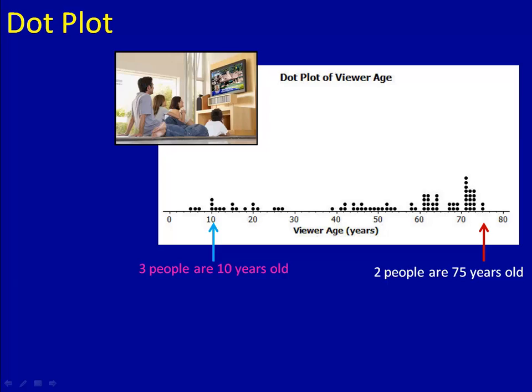We can tell by looking at this dot plot that there are viewers of all ages, people from three years old on up to 75. There's lots of good information that we can tell from this. So first, let's begin by practicing how to construct a dot plot.